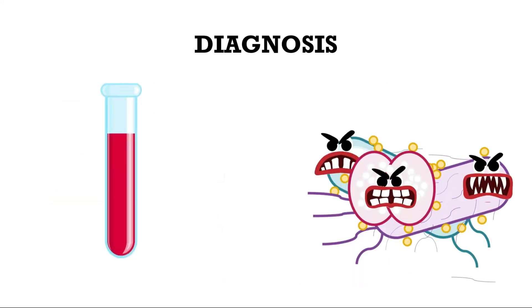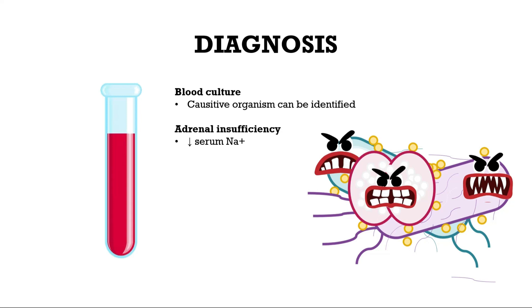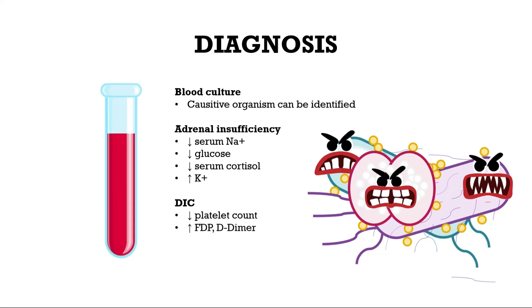Laboratory diagnostics could include a blood culture to identify the causative organism, proof of adrenal insufficiency by low sodium levels, low glucose levels, low cortisol levels, as well as high potassium levels. DIC could be diagnosed by low platelet count, high D-dimers, low fibrinogen, and high PT and PTT.